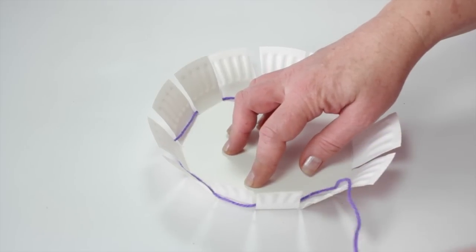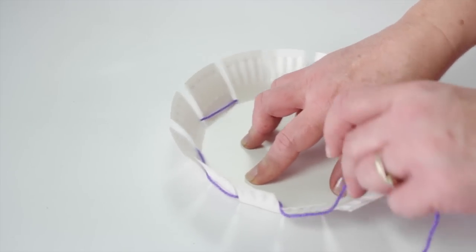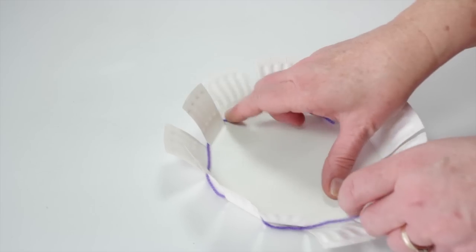With the yarn, go over and under the tab around the plate. Keep repeating this over and under process.